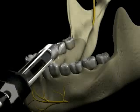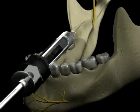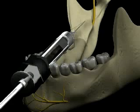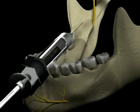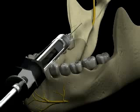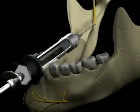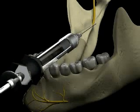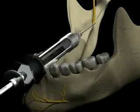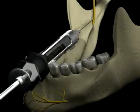If you contact bone too soon — in other words, significantly less than 25 millimeters — you will need to redirect the syringe and carry out the indirect technique. This is accomplished by withdrawing the syringe slightly, moving the barrel more medially over the contralateral canine or incisors, and advancing again until bone is contacted.